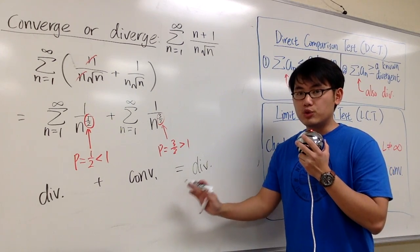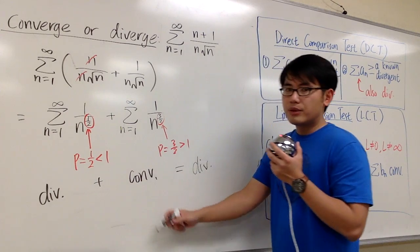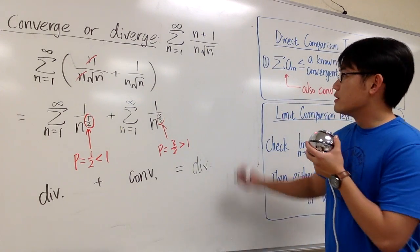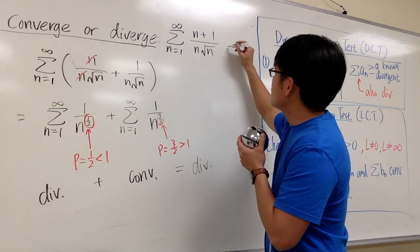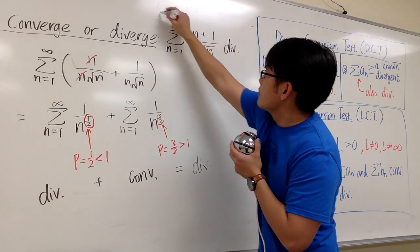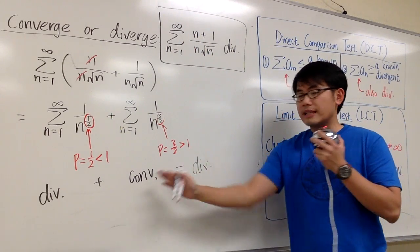This is the part that we can draw conclusion. It's like, once again, infinity plus a finite number, it is still going to be infinity. So therefore, we know that the original series, it diverges. And that's it, we can just say that's the reason for that.